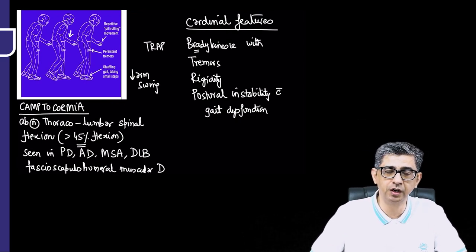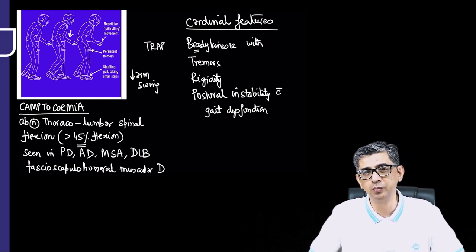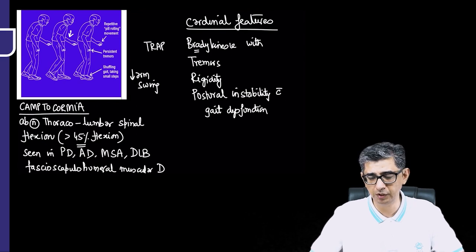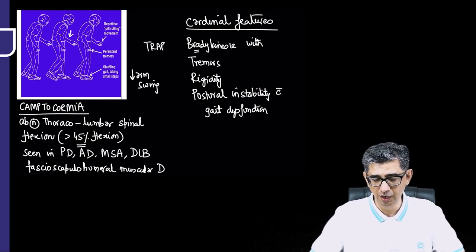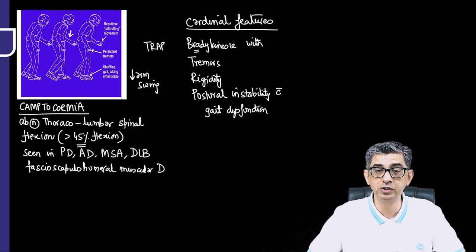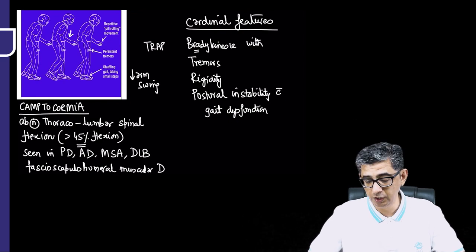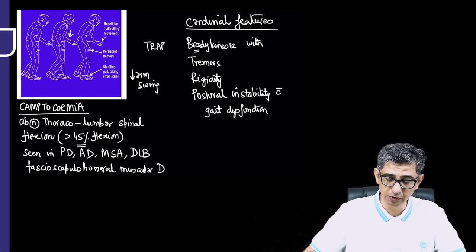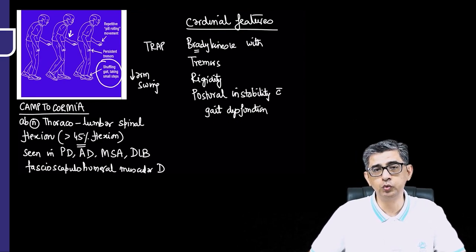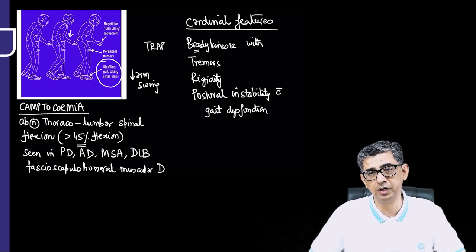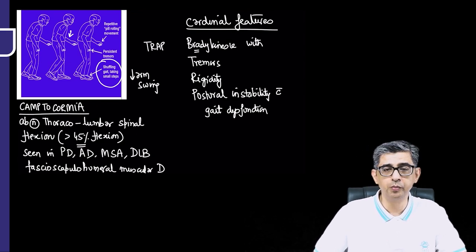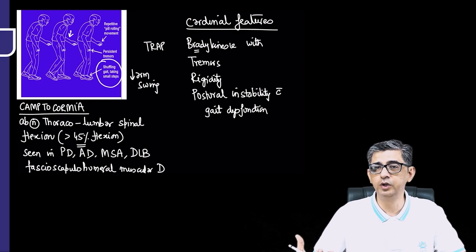Camptocormia, which is an arbitrary cutoff of 45% for the thoracolumbar spine flexion, can also be encountered in Alzheimer's disease or in multisystem atrophy, fascioscapulohumeral dystrophy. So it's not a cardinal feature or not very important for diagnosis. But here, the gait abnormality, the stooped posture, when he walks in short shuffling steps, that definitely adds up to the possibility of diagnosis of Parkinson disease in a patient.